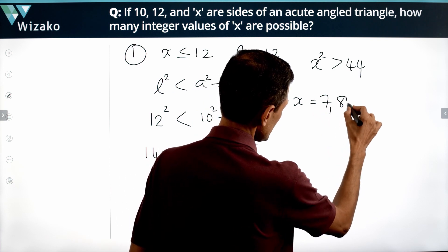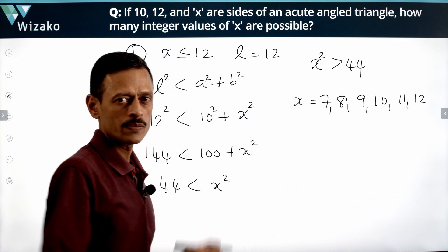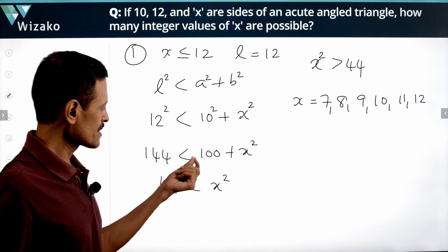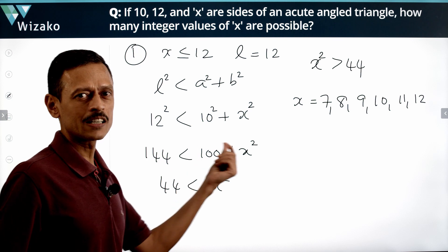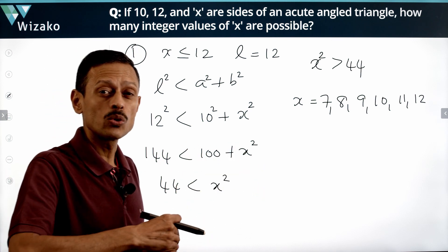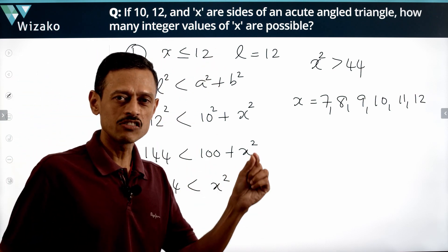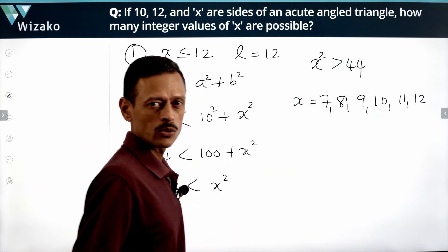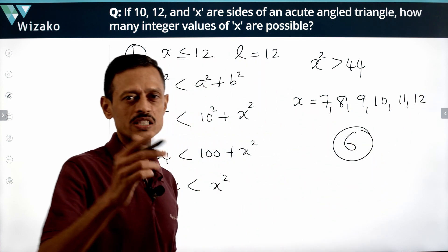So in Scenario 1, the valid integer values of x are 7, 8, 9, 10, 11, and 12. For all these values the inequality holds: 144 < 100 + 49, 100 + 64, 100 + 81, 100 + 100, 100 + 121, 100 + 144. Beyond 12, the inequality still holds, but at that point L is no longer 12 — that falls into Scenario 2. So Scenario 1 gives us 6 values.